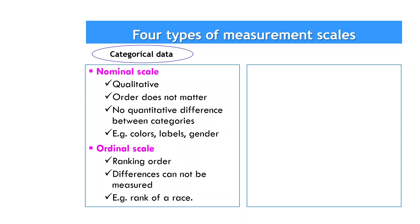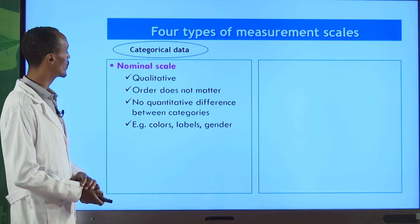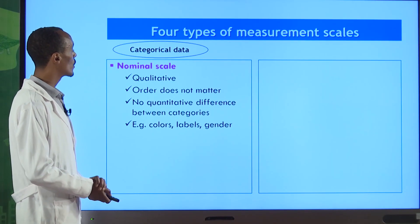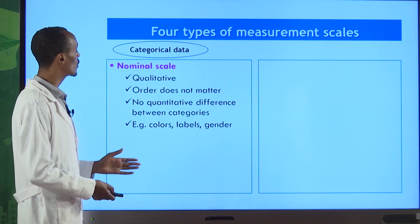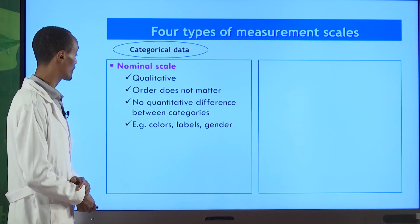The nominal scale is one of the types of categorical data, which is qualitative in nature. When referring to nominal data, the order of characteristics does not matter — the order is not the basic issue and there is no quantitative difference between the categories. Examples include colors and gender. You can start by red, then green, then blue and so on. As a student, you have to know that in the case of the nominal scale, the order doesn't matter.